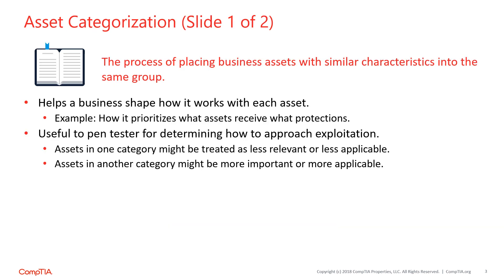Asset categorization, also known as asset classification, is the process of placing business assets with similar characteristics into the same group. This helps a business shape how it works with each asset, such as how it prioritizes what assets receive the strongest security protections. From the perspective of a pen tester, categorizing assets is a helpful step in determining how to approach exploitation efforts. You might treat assets that belong to one category as less relevant to the test, even if their vulnerabilities will be easier to exploit.